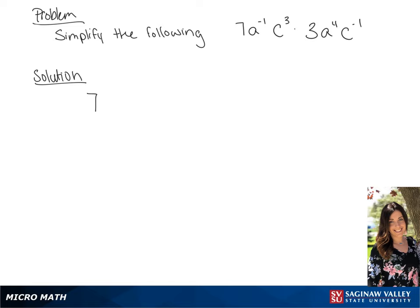We have 7a to the negative 1 c cubed times 3a to the 4th c to the negative 1. We're going to multiply 7 and 3 to get 21.